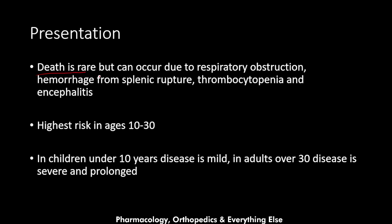Death is rare in mono but can occur due to respiratory obstruction from swelling, hemorrhage from splenic rupture — as there is splenic enlargement which may rupture — thrombocytopenia leading to bleeding, or encephalitis when the disease spreads to the brain. The highest risk of infection is in ages 10 to 30. In children under 10 the disease is mild, but in adults over 30 it is severe and prolonged.